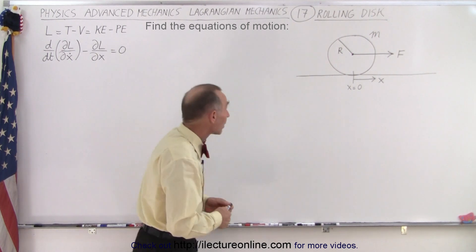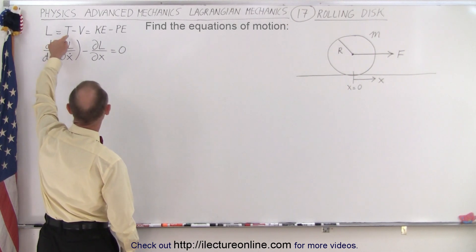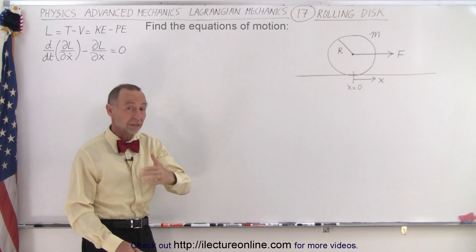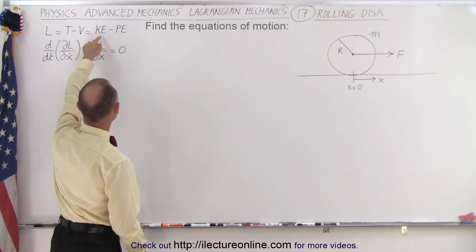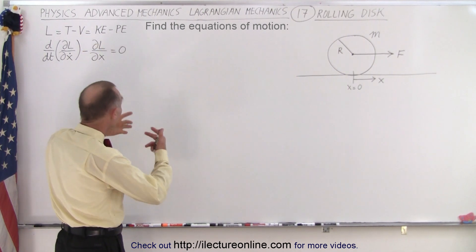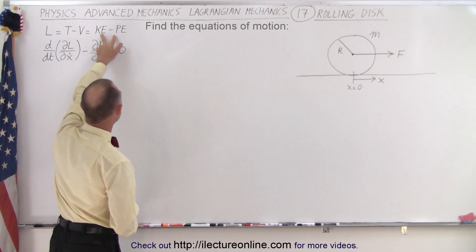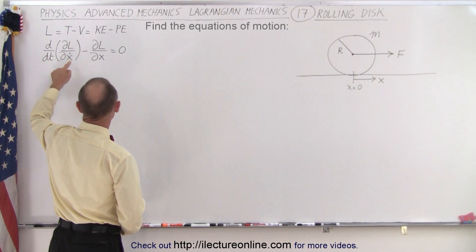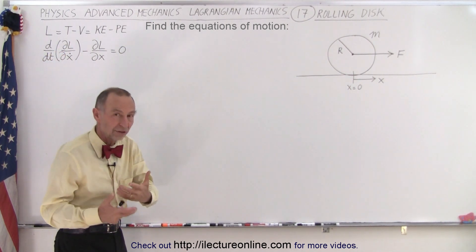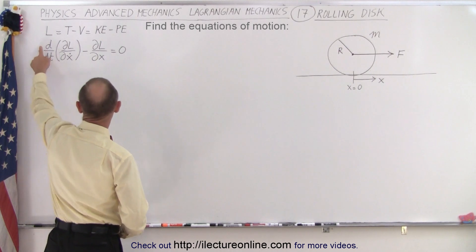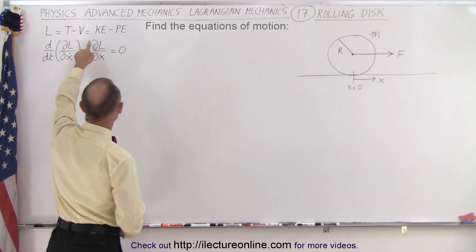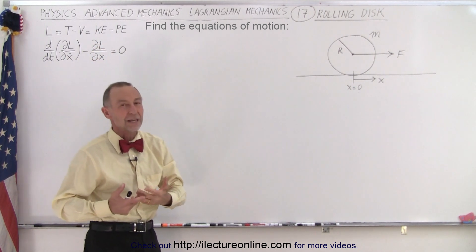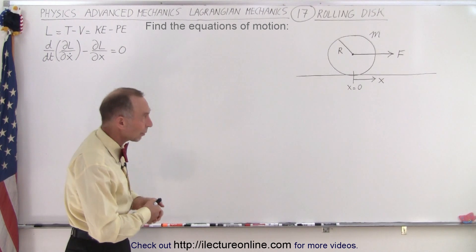Essentially what we're doing here is saying that the Lagrangian is equal to the difference between the kinetic and potential energy. They use T and V for kinetic and potential energy, but I like to write KE and PE to make it a bit more clear. So we find the difference between the kinetic and potential energy, then we take the partial derivative of that with respect to x dot, which is essentially the velocity, and then we take the time derivative of that and we subtract from that the partial derivative of the Lagrangian with respect to x or whatever the variable is that we use.